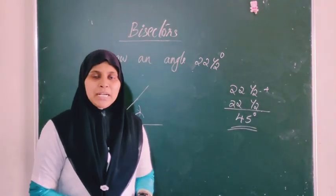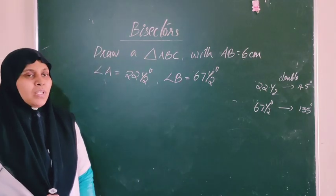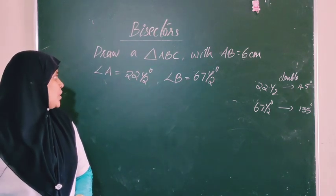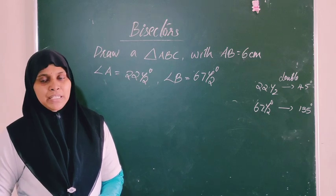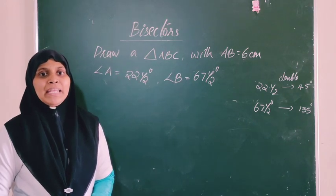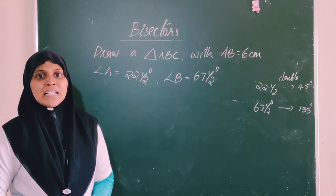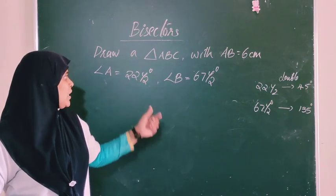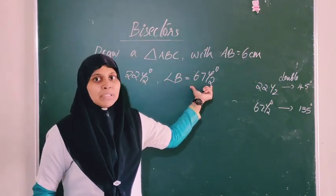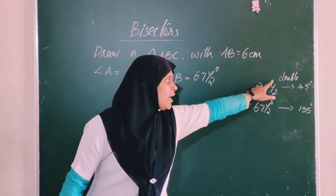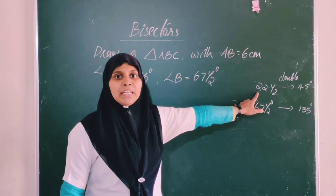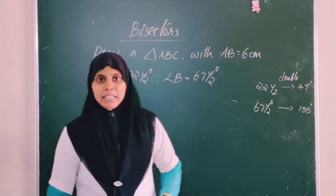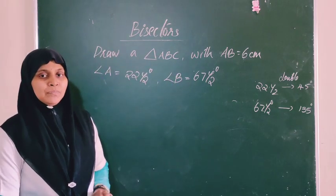This method we will apply to the next question. The question is: draw a triangle ABC with AB equal to 6 centimeters, angle A equal to 22 and a half degrees, and angle B equal to 67 and a half degrees. Since we cannot directly draw 22.5 or 67.5 degrees with a protractor, we double them: 22.5 doubled is 45 degrees, and 67.5 doubled is 135 degrees. Then we bisect those angles.